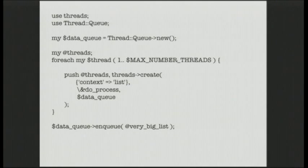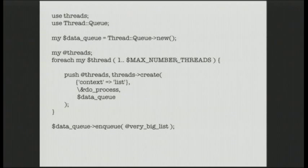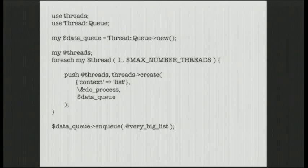Let's talk about threads. I've changed the structure slightly because it would be unfair to show a threads example that doesn't take advantage of queues. The type of work we have - a very large list of things, pulling something off and working on it - is inherently a queue structure. Showing a threads example with just a foreach loop would not be a fair example of what threads can do. The structure's slightly different, but I think you'll understand.